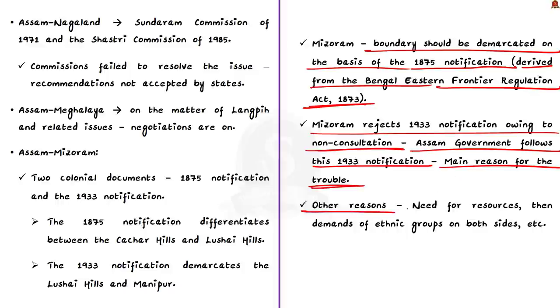However there are other reasons also such as need for resources, demands of ethnic groups on both sides etc. All of this complicates the ongoing insurgency situation in the Northeastern states. On a whole, if you ask why Nagaland and Mizoram and Meghalaya are having conflict with Assam, it is because all these three states were carved out of Assam and they do not have proper boundary demarcation. That is why often there is boundary dispute between these states and Assam.